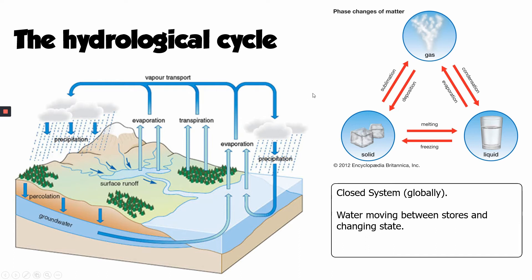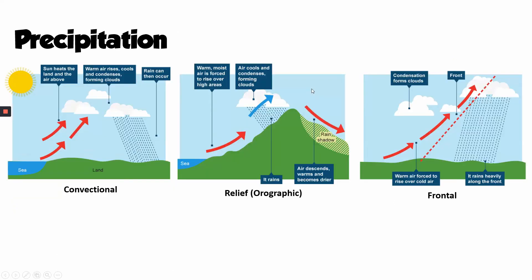Now let's look at some of these processes in more detail, starting with precipitation. Precipitation — rainfall, snowfall — is a really important element of the water cycle. There are three types of precipitation, and before looking at the specifics, it's important to understand what they all have in common. In all cases, the air is rising, it is cooling down, the water vapour within that air is condensing, and then we get rainfall. That process — air rising, cooling, condensing — happens whenever precipitation occurs.